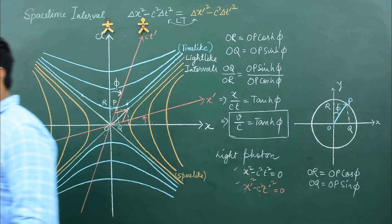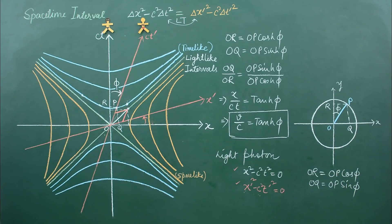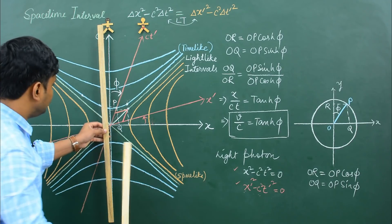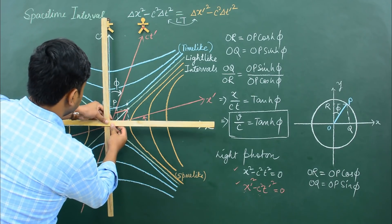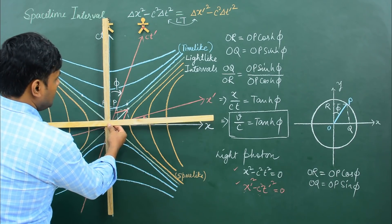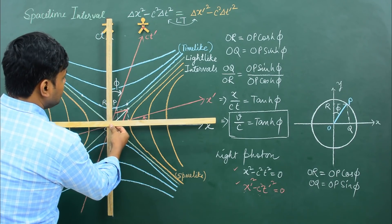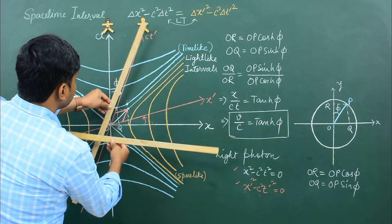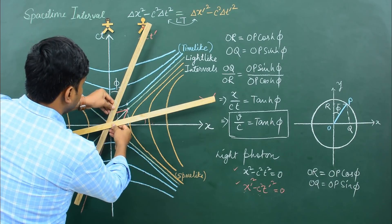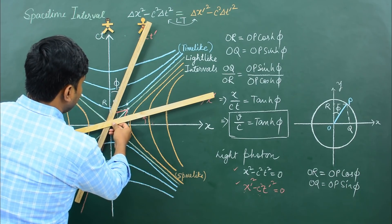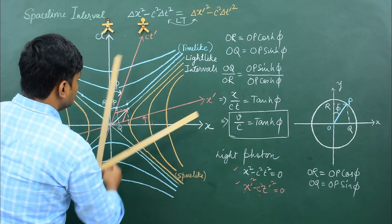For an observer at rest, his time axis and his space axis look something like this. For an observer in relative motion, his time axis and his space axis look something like this.